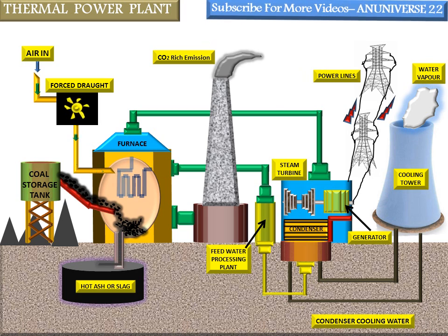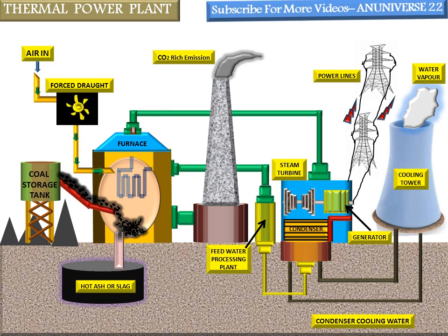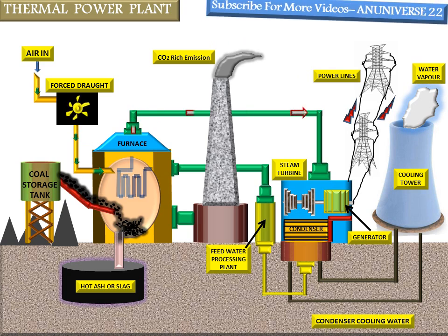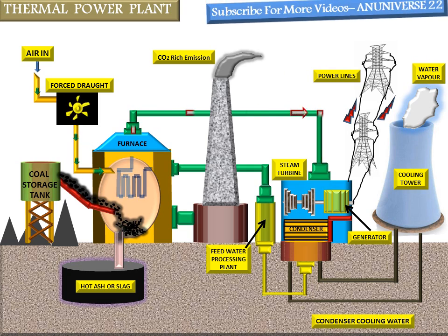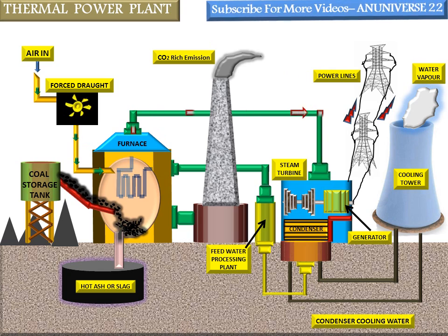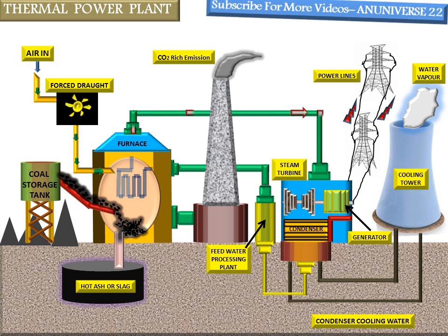The steam generated in the boiler is fed to the steam prime mover or steam turbine. As we can see with the help of the arrows, steam is supplied to the steam turbine. The steam supplied to the steam turbine converts heat energy into mechanical energy. The steam is generated in the boiler using the heat of fuel burned in the combustion chamber, and the steam generated is passed through the steam turbine where part of its thermal energy is converted into mechanical energy.